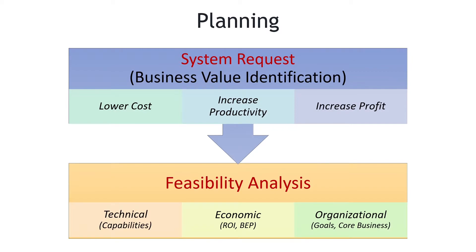Di tahap planning ini ada system request. Kita buat system request dari product owner-nya — minta dibuatkan sistem atau software. Di system request ini ada business value identification. Jadi tujuannya membuat software atau system itu adalah mengurangi cost, meningkatkan produktivitas, dan meningkatkan profit. Ini pilihan — bisa semuanya atau mungkin salah satu.